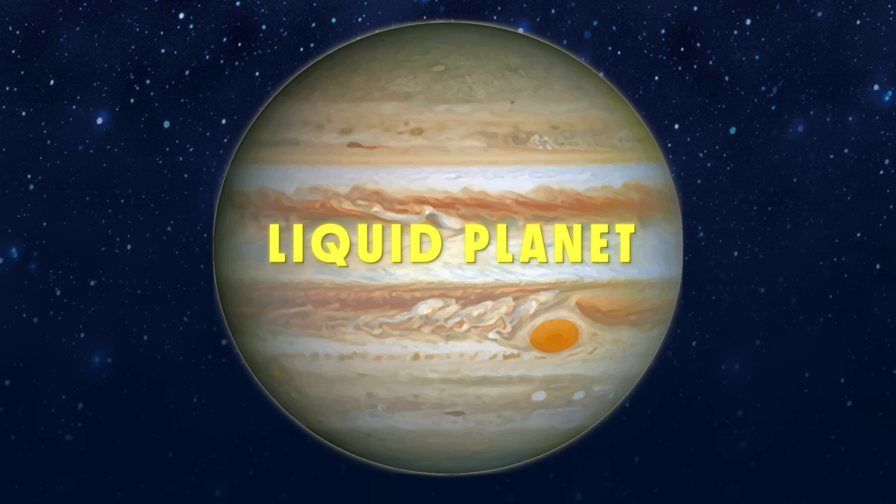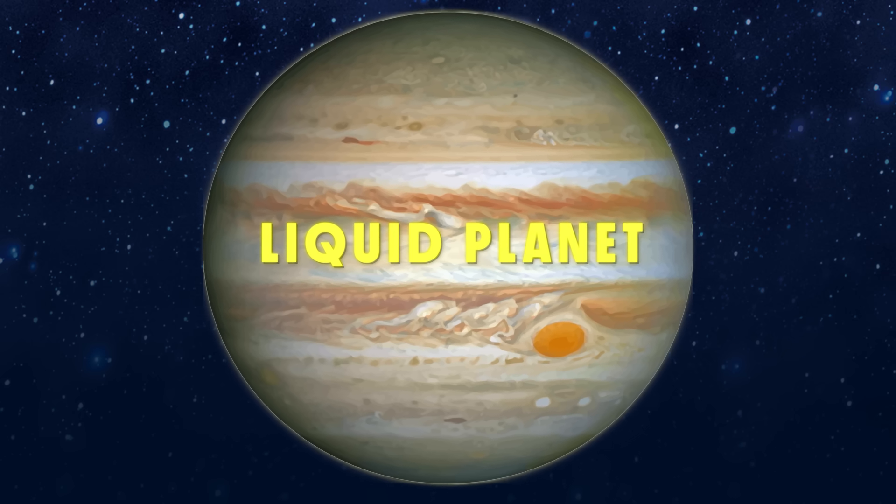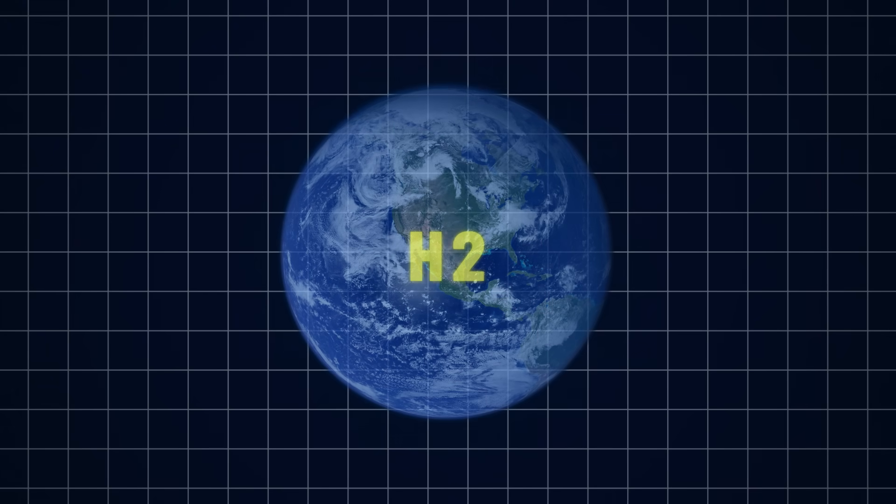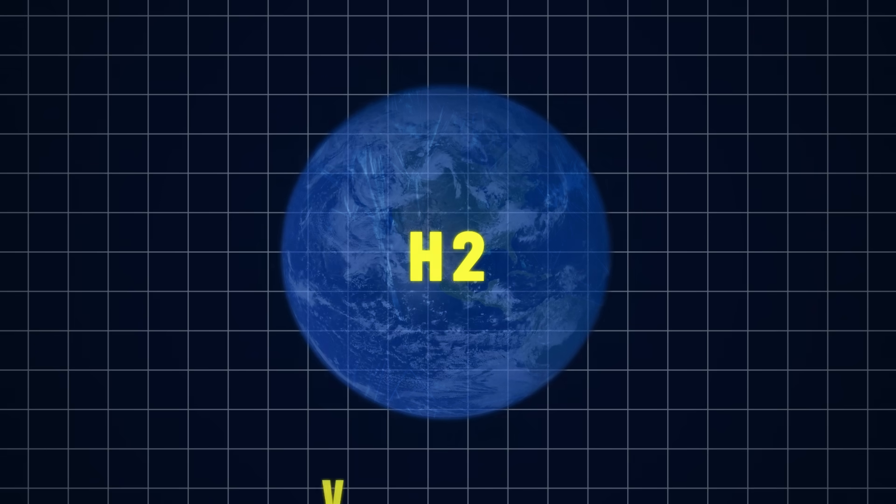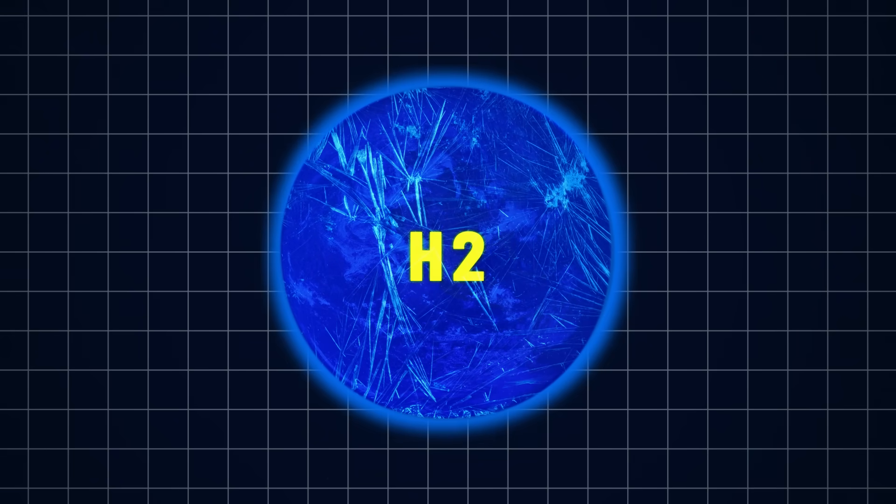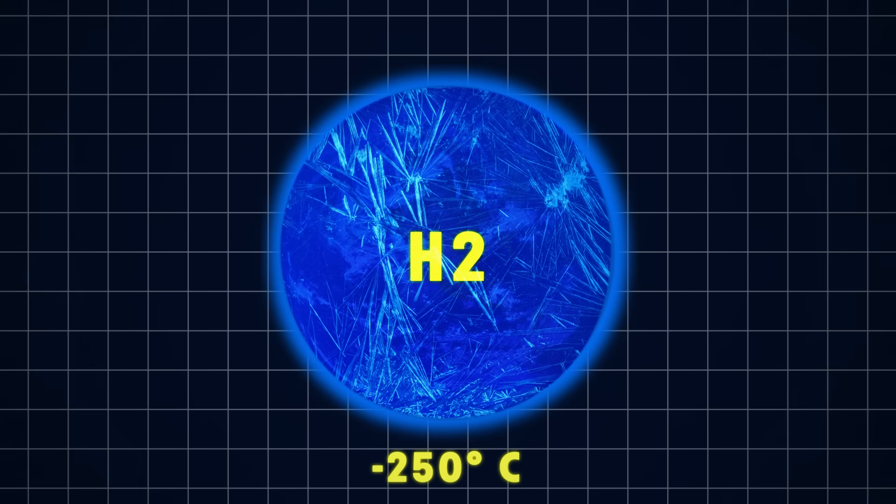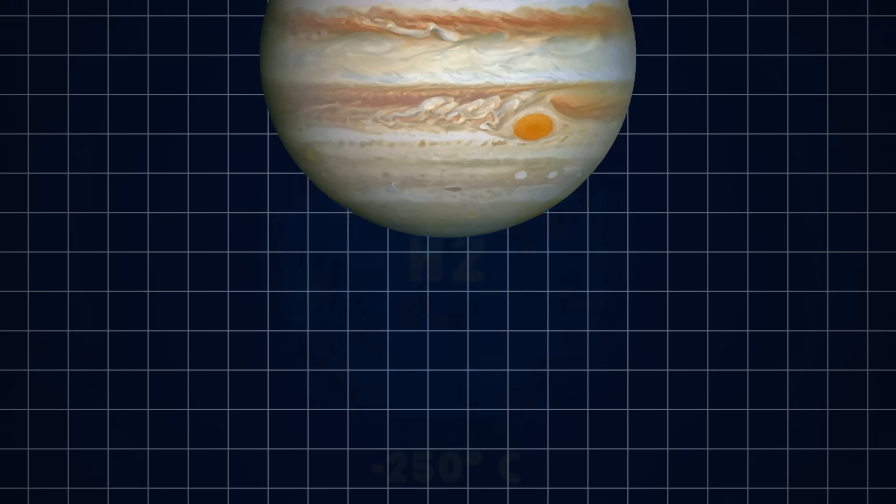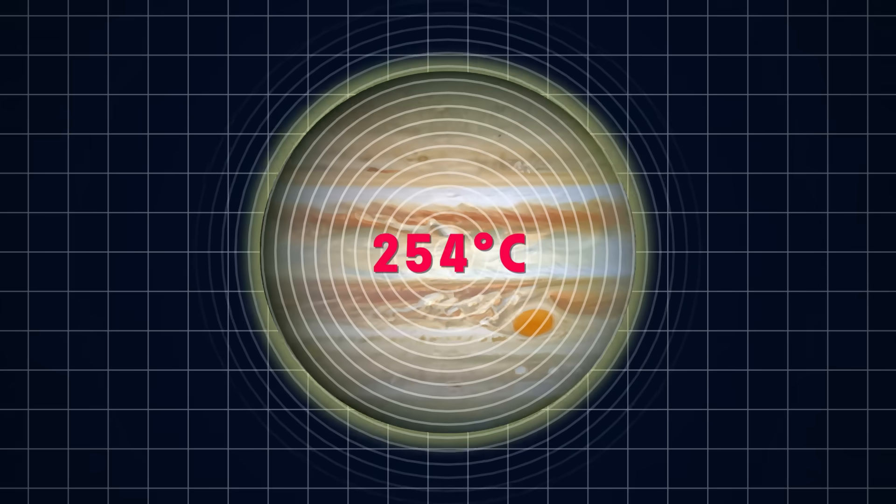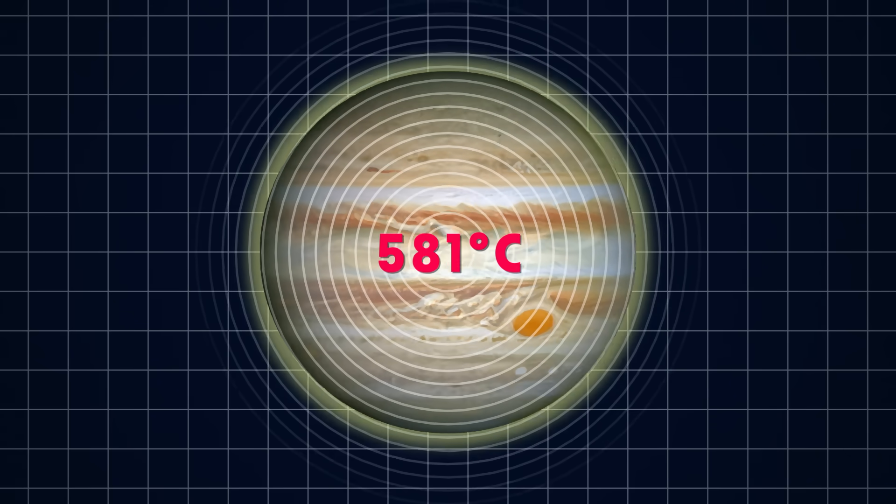It is a liquid planet, but this is a far stranger liquid than anything we've seen before. On Earth, we can liquefy hydrogen by making it very cold. The atmospheric pressure of Earth lowers the boiling point of hydrogen to around negative 250 degrees Celsius. But on Jupiter, the opposite effect is going on. The intense pressure raises the boiling point so high that it can exist as a liquid even at temperatures well over 1,000 degrees.